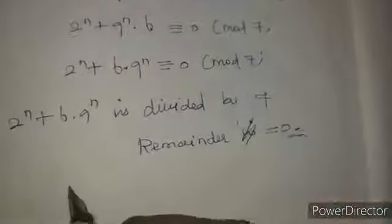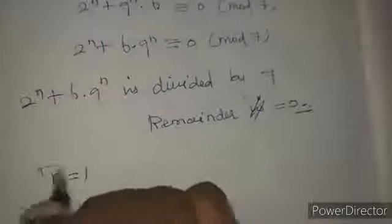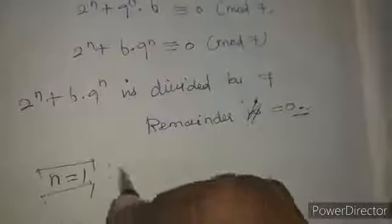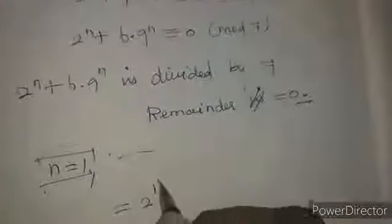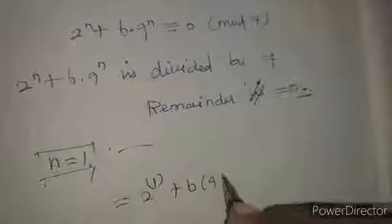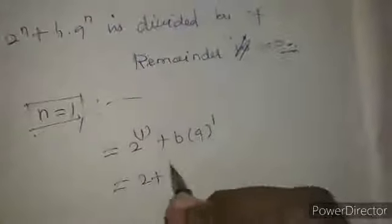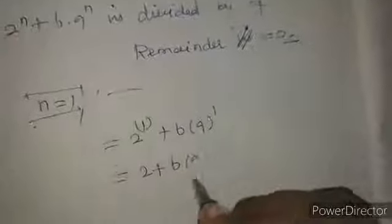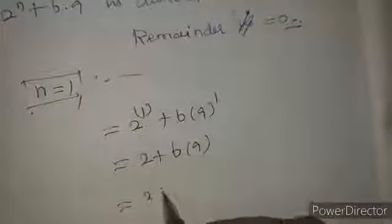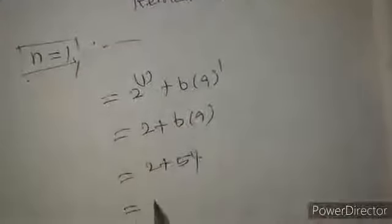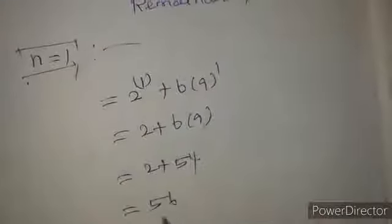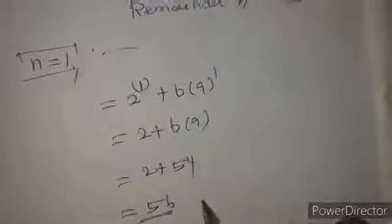To verify, let n equal 1: 2^1 + 6·9^1 = 2 + 54 = 56. And 56 is indeed divisible by 7. This confirms the result is correct.